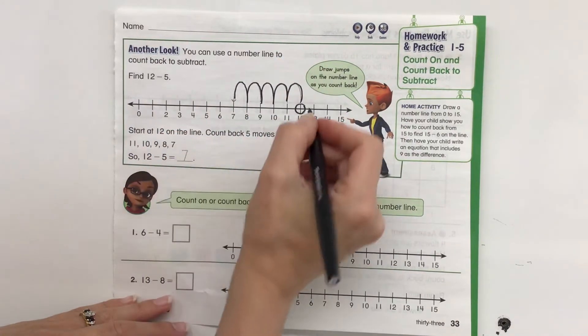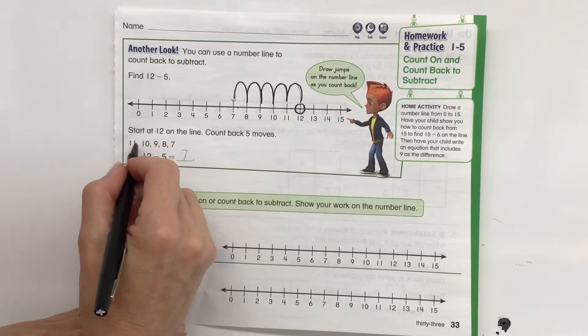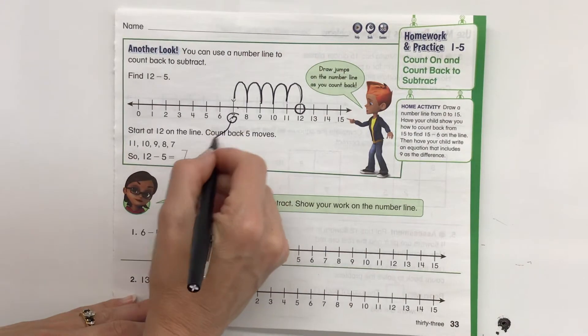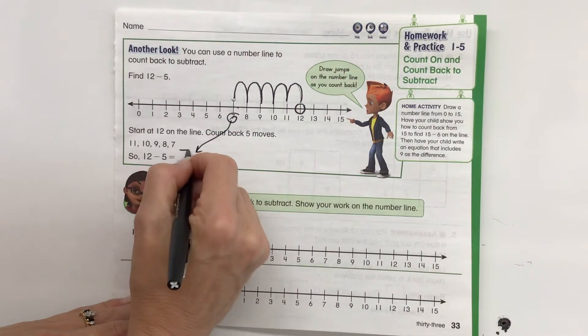Start at 12 on the line. Count back 5 moves. 11, 10, 9, 8, 7. So we know that 12 minus 5 equals 7.